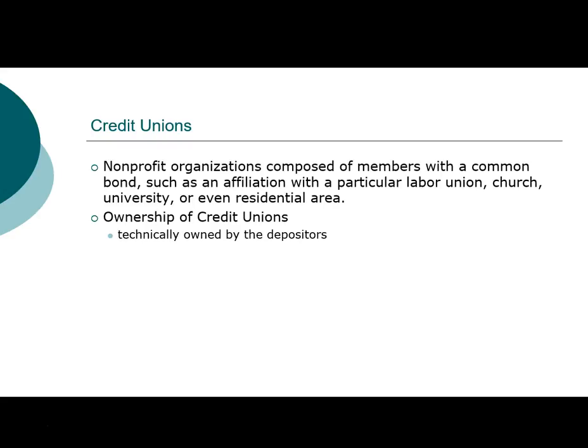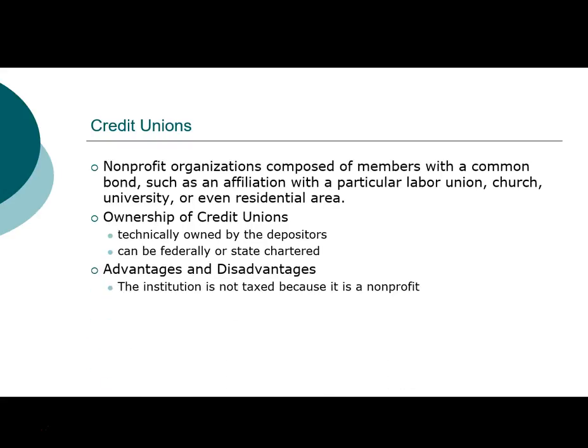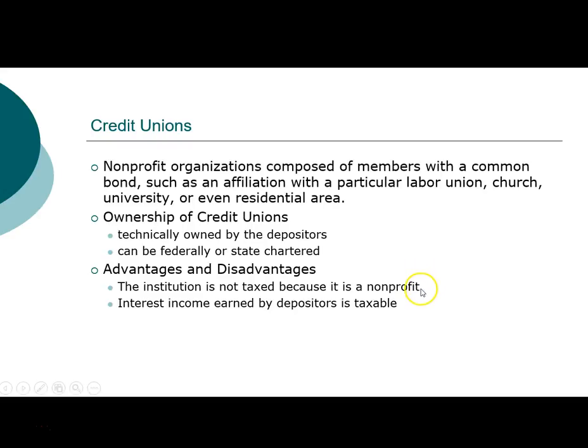Because credit unions are non-profits, they are technically owned by all the depositors — very similar to a mutually owned savings institution. Credit unions can have a federal charter or a state charter. If it's a federal charter, it is regulated by a federal bank examiner; if it's a state charter, it is regulated by the state agency. The advantage of being a credit union is that because it is a non-profit, it is not taxable. This tax-exempt status extends only to the credit union itself; the interest income earned by a depositor from the credit union is still taxable, but the credit union itself has no income because it's a non-profit.